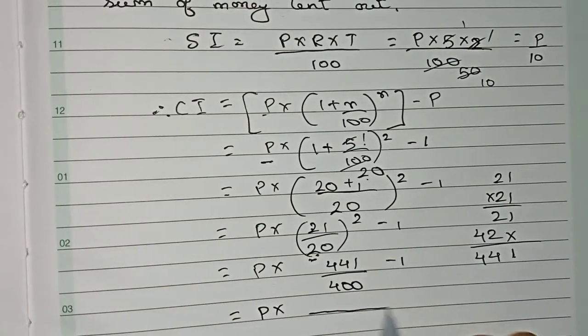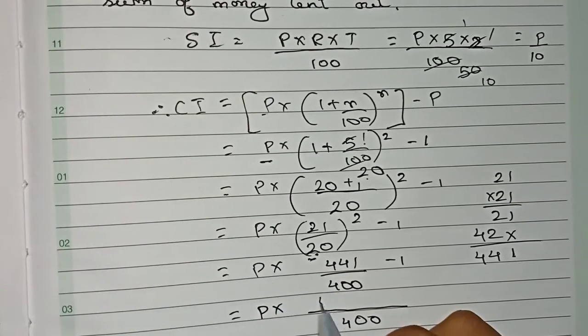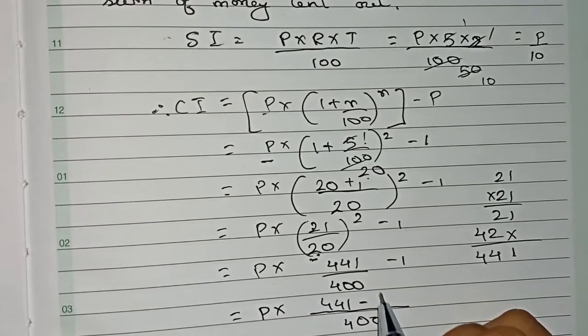Now we find principle × taking 400 as the denominator: 441 minus 400, that is 41/400.